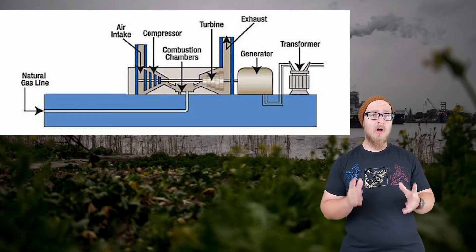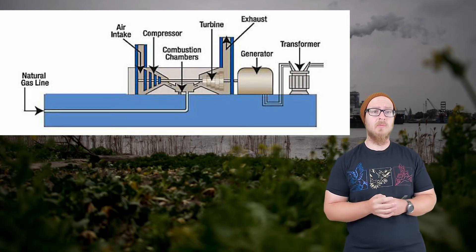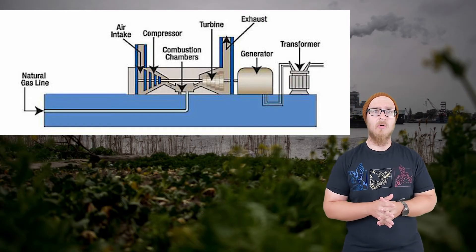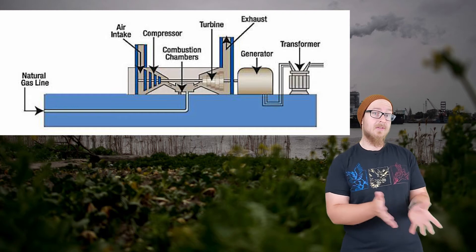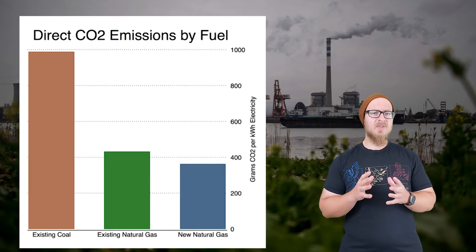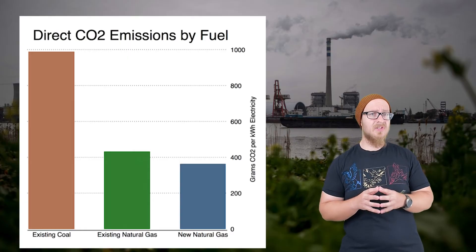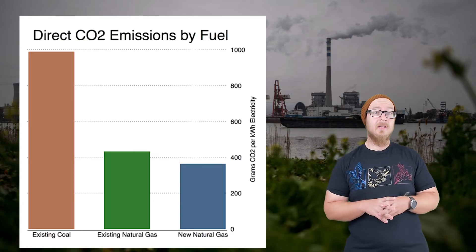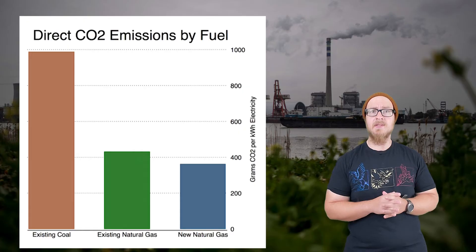Natural gas can also be used for producing electricity, which works much the same way as coal — the natural gas is burned instead. Natural gas burns a lot cleaner and produces fewer pollutants than coal; in fact, it almost completely combusts.